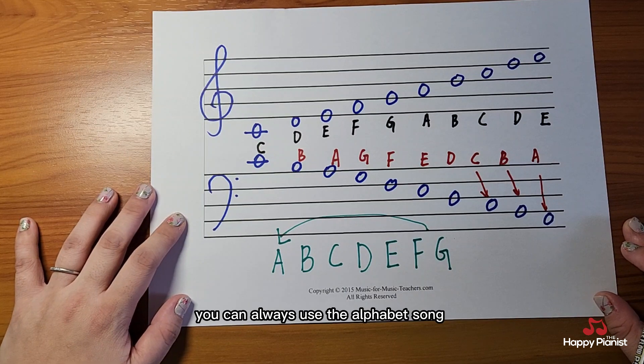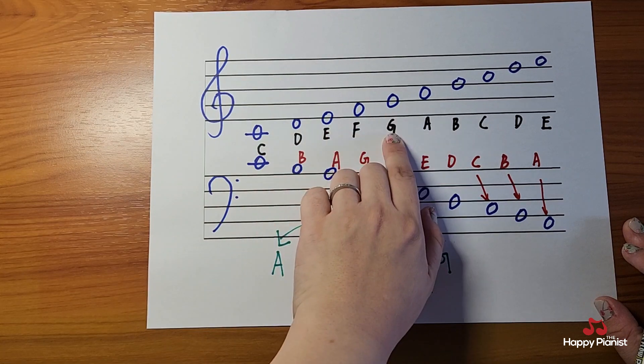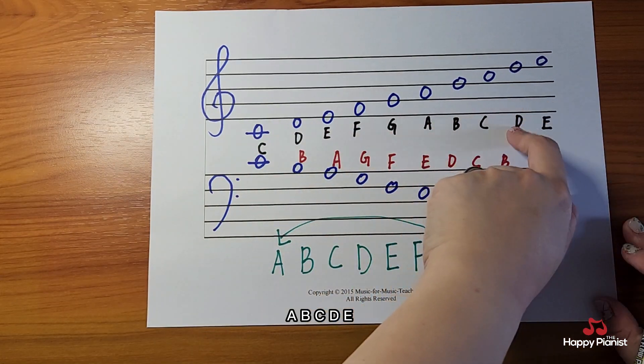You can always use the alphabet song. A, B, C, D, E, F, G, back to A. A, B, C, D, E.